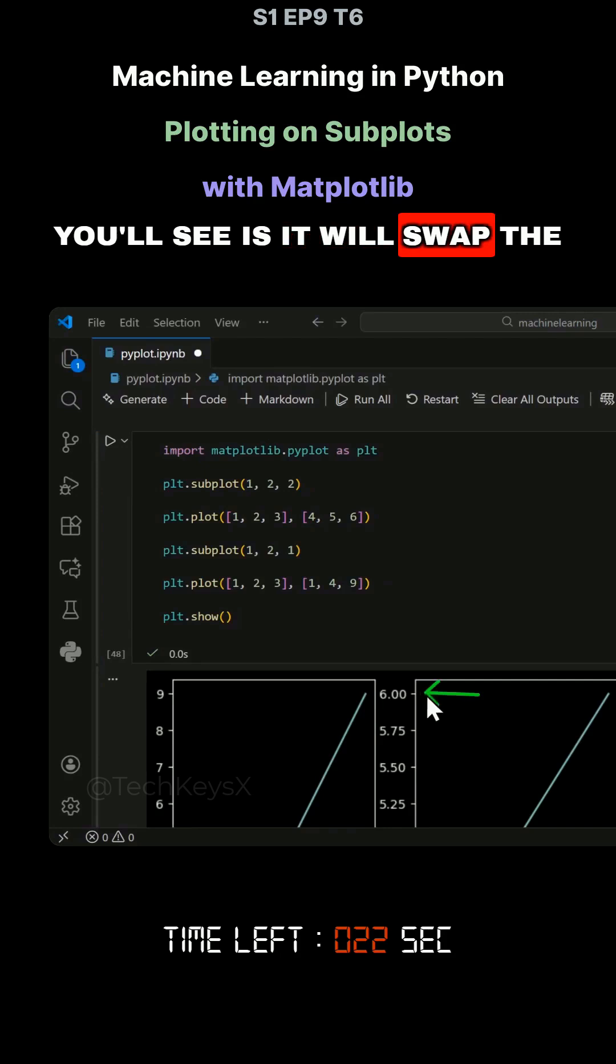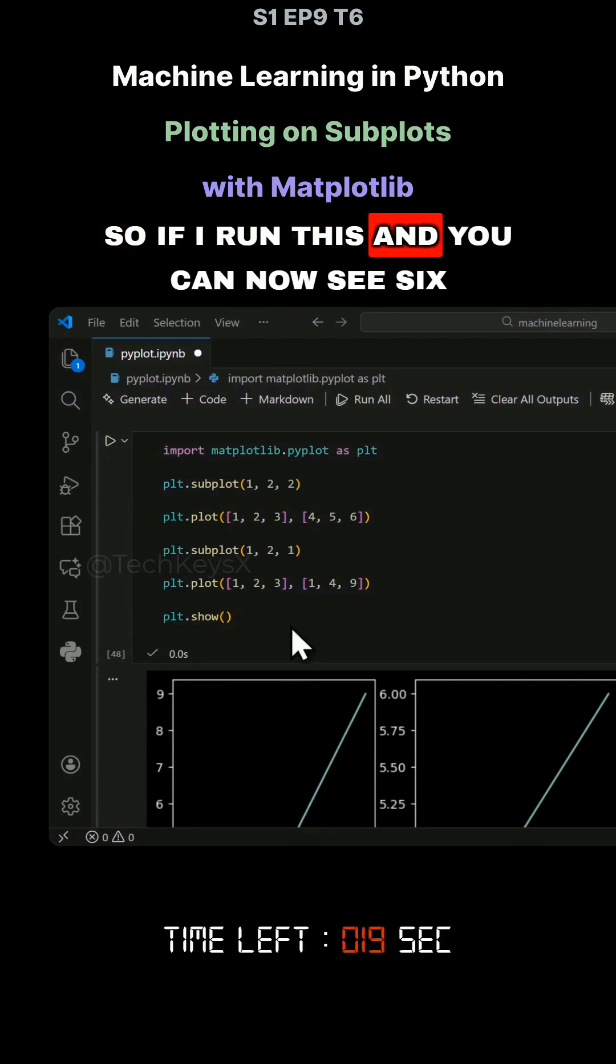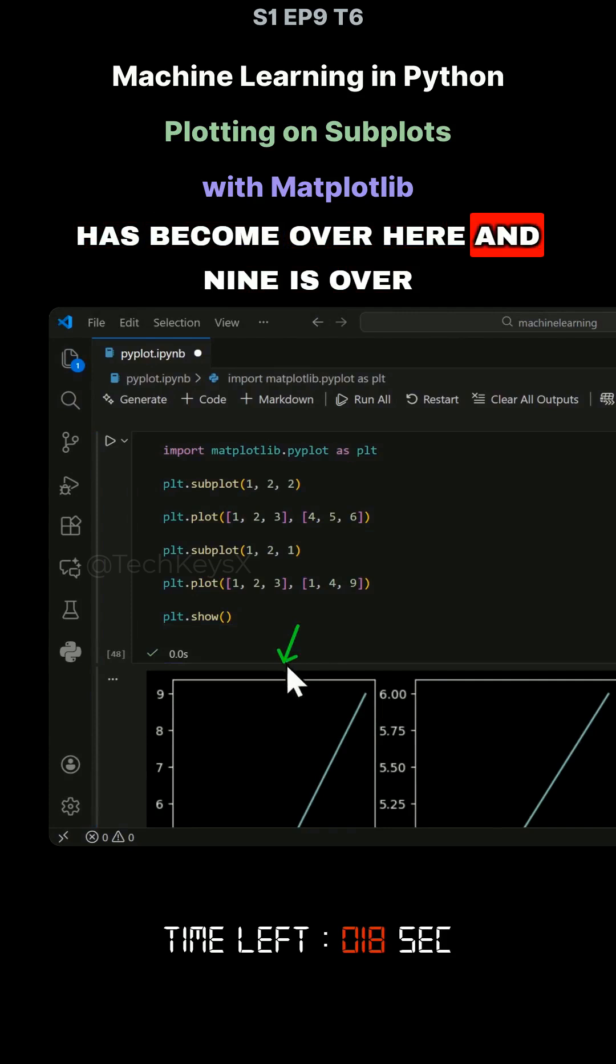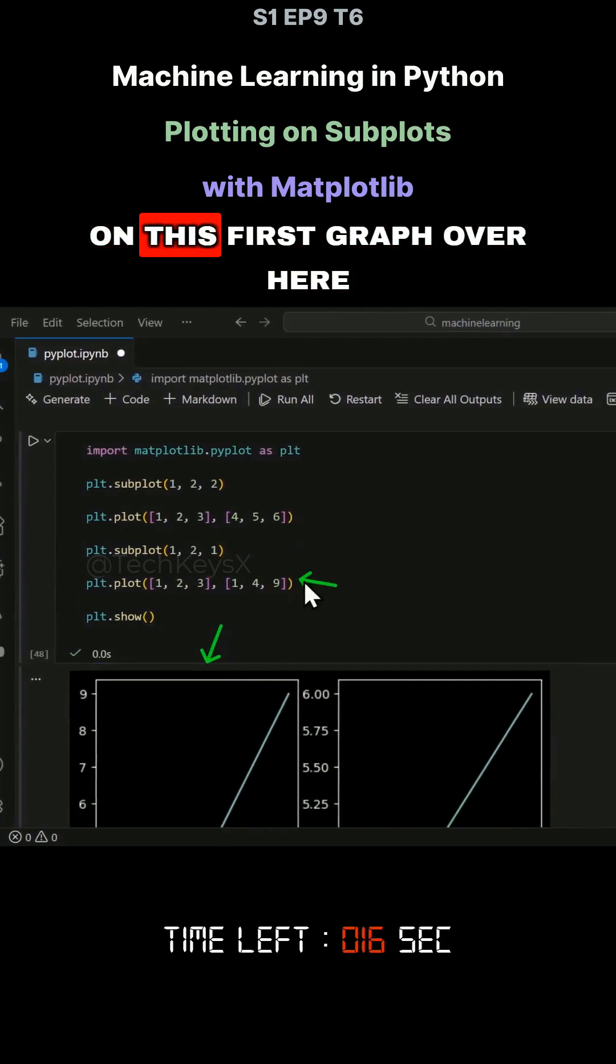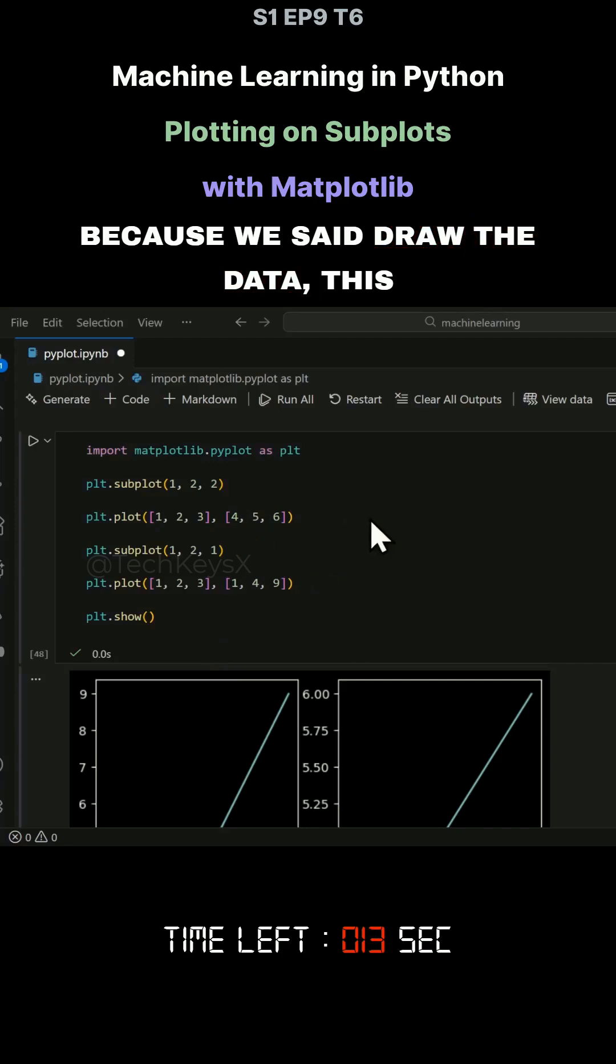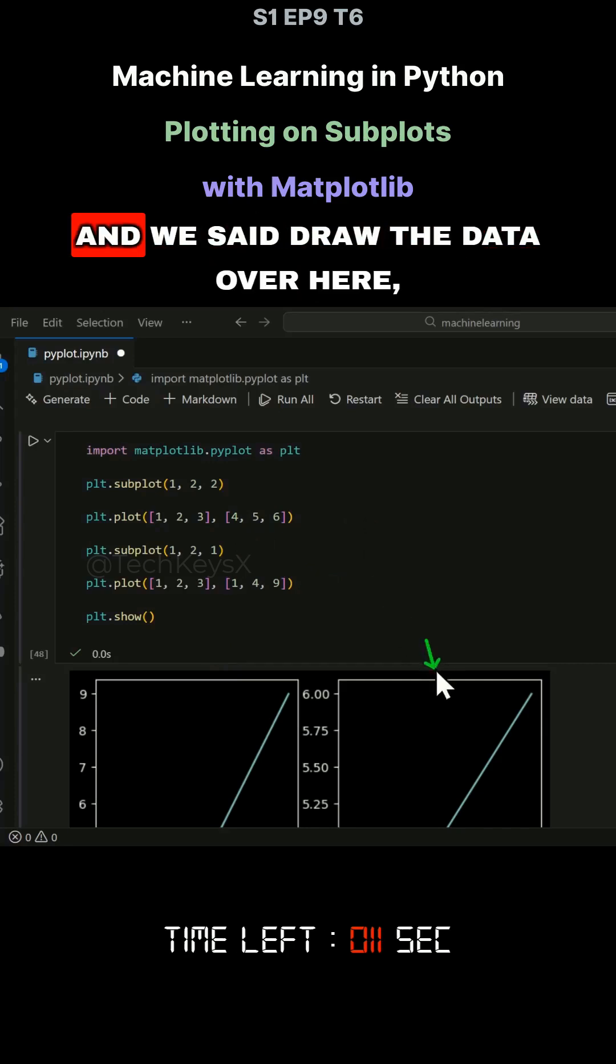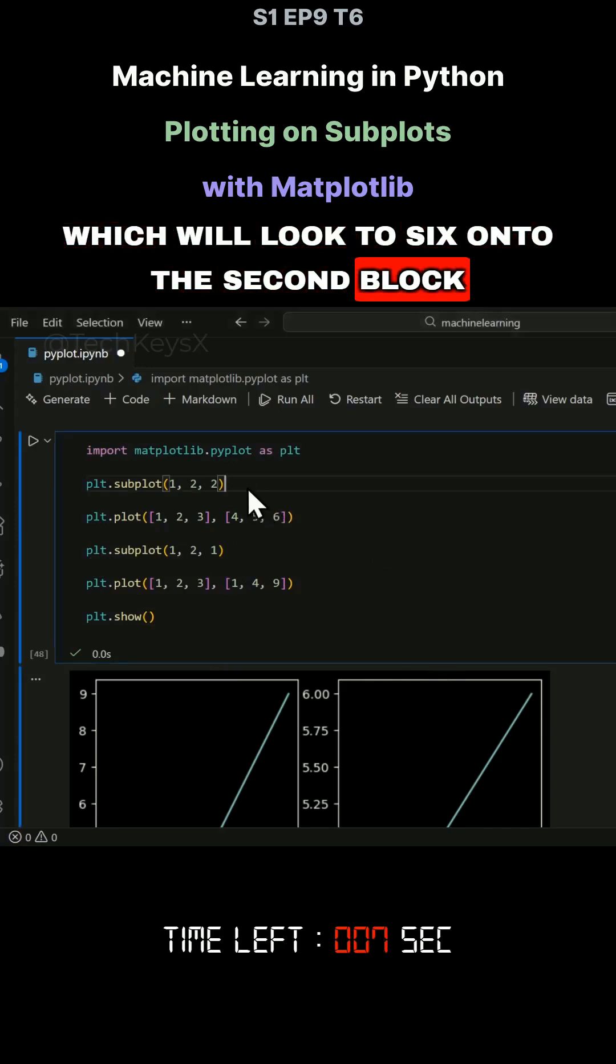what you'll see is it will swap the position of the graph. So if I run this and you can now see six has become over here and nine is over on this first graph over here because we said draw the data, this data onto the first graph.